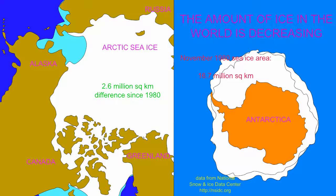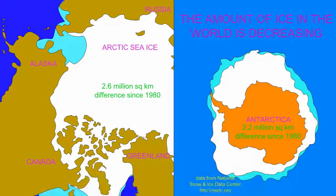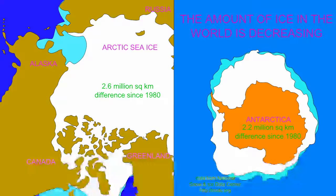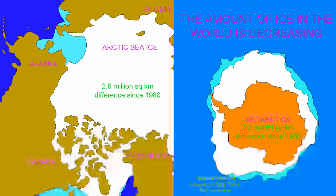While the 1980 value was 16.7 million square kilometers of sea ice around Antarctica, the value in November 2016 was 14.5 million square kilometers — a difference of 2.2 million square kilometers. Taken together in November 2016, there was 4.8 million square kilometers of sea ice less than in November 1980, equivalent to half the land area of the United States.